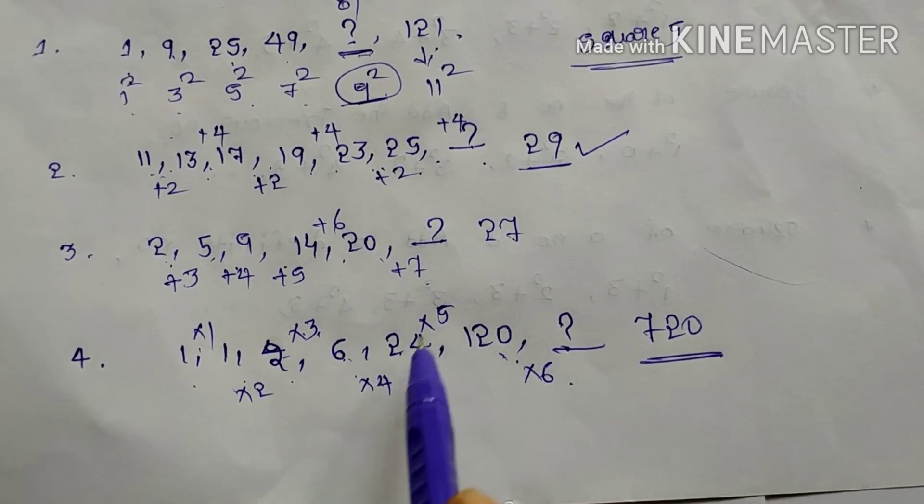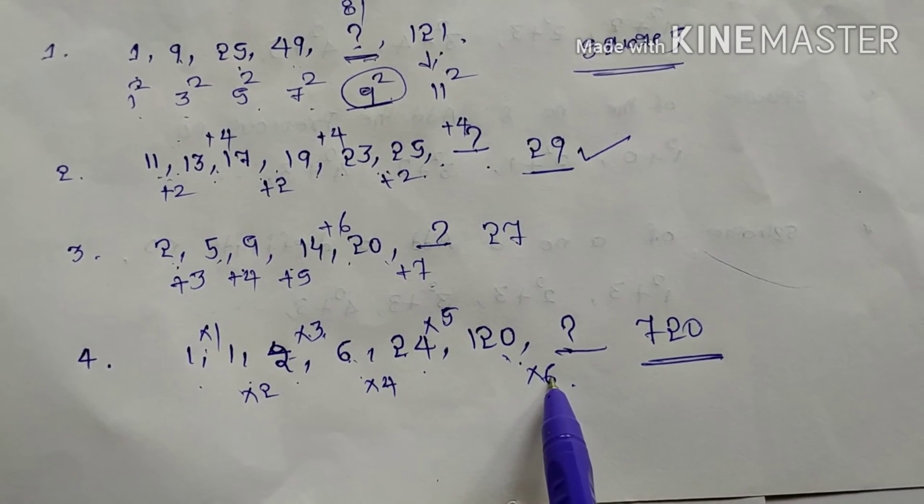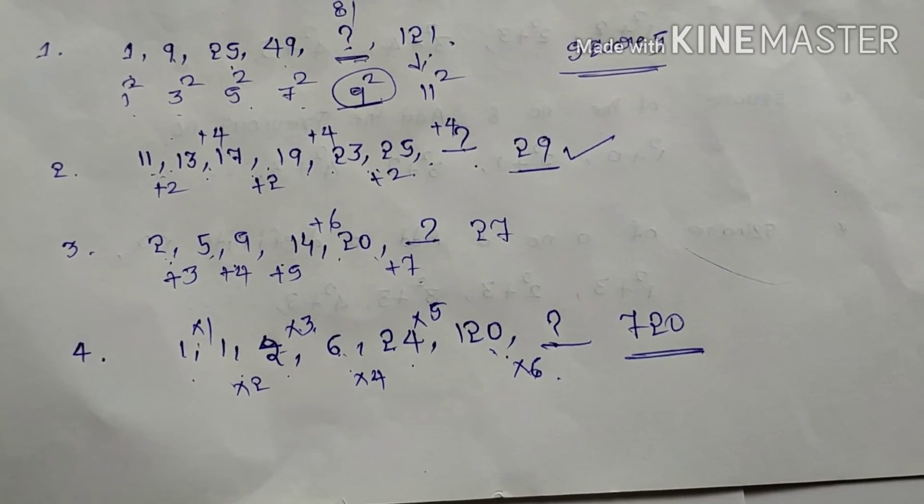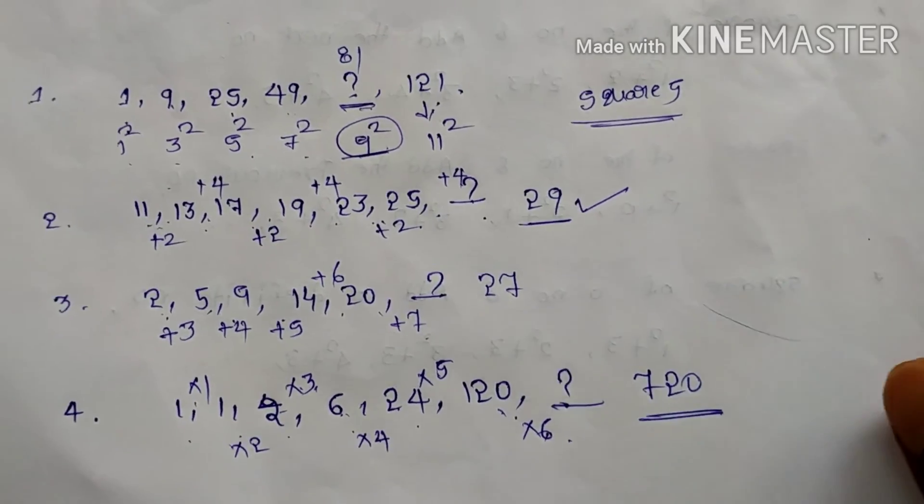Just you can see. Into 1, into 2, into 3, into 4, into 5, into 6. Next number if you want. Into 7 you can do. 720 into 7. That is your answer only.